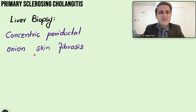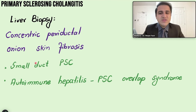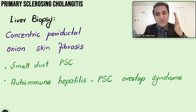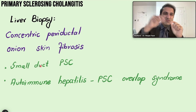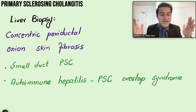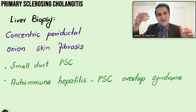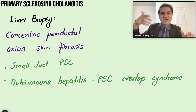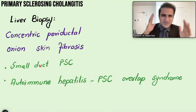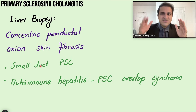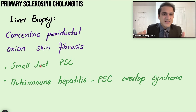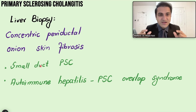Liver biopsy is not usually done but is indicated when imaging is insufficient — for example, in small-duct PSC, where small ducts are involved but larger ducts appear normal on MRCP. In this scenario, LFTs show elevated ALP and GGT but MRCP shows no abnormality, creating diagnostic confusion.